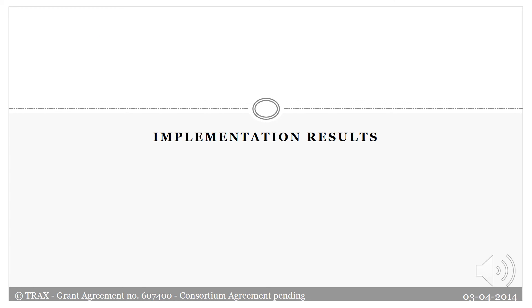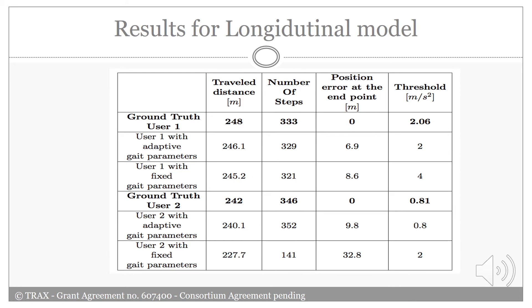In this section, I'm gonna represent the implementation results. This table represents the results from applying the longitudinal model. The results of adaptively determining the step detection threshold are compared to the results when fixing the threshold to suit user 1. In this table, the estimates are compared to the ground-truth values for the gate parameters and the travel distance. As you can see, the estimates obtained with the fixed threshold for user 1 are comparable to those obtained with the adaptive one.